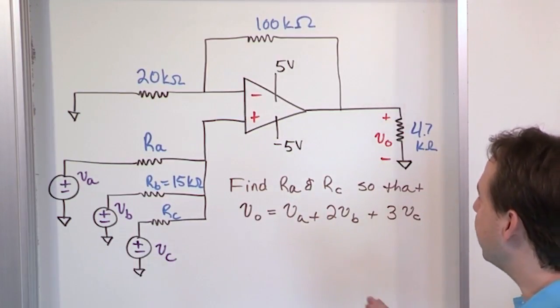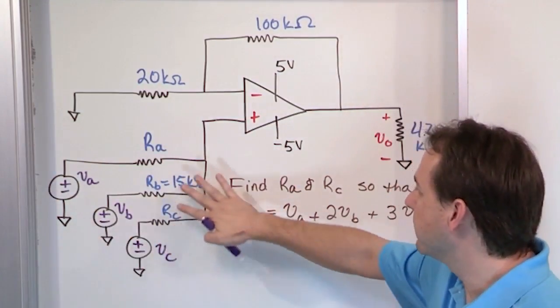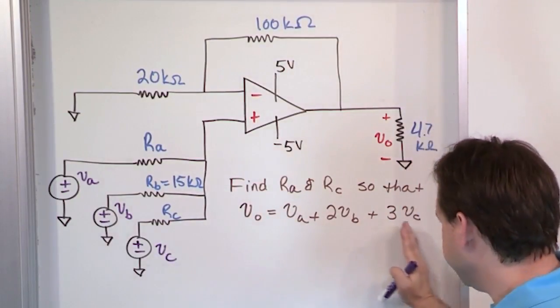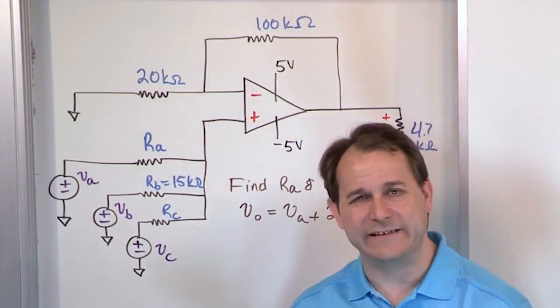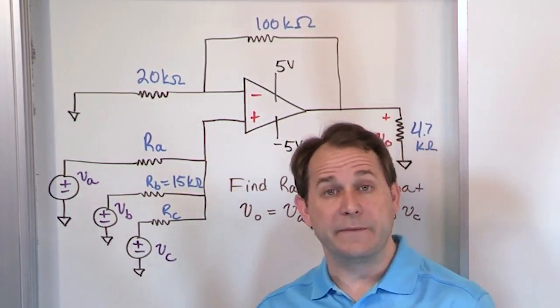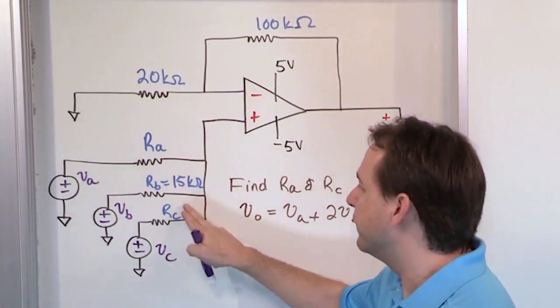So basically what you have to do is formulate a strategy so that you write an expression for the output of this amplifier, given all of this junk, right? And then you're going to end up setting it equal to what you're told that the output should be. And from that nasty, nasty equation, I'm building it up a little too much. It's not that bad.